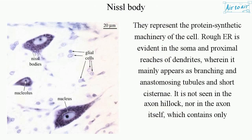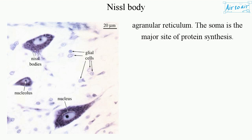They represent the protein synthetic machinery of the cell. RER is evident in the soma and proximal reaches of dendrites, wherein it mainly appears as branching and anastomosing tubules and short cisternae. It is not seen in the axon hillock, nor in the axon itself, which contains only a granular reticulum. The soma is the major site of protein synthesis.